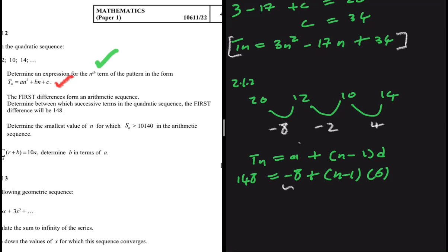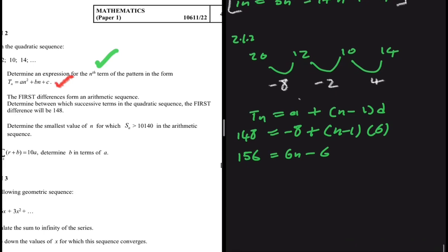Taking minus 8 to the left-hand side gives 148 + 8 = 156, which equals (n − 1) × 6, so 6n − 6 = 156. Taking 6 to the left gives 6n = 162. Dividing both sides by 6 gives n = 27.